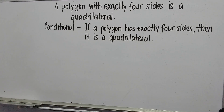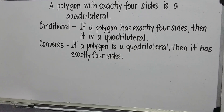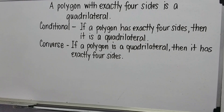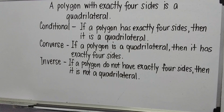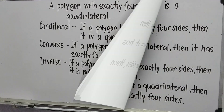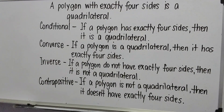Now, let us change that to a converse statement. The converse statement: if a polygon is a quadrilateral, then it has exactly four sides. The hypothesis and conclusion are now interchanged. Take a look at the inverse statement: if a polygon does not have exactly four sides, then it is not a quadrilateral. Both the hypothesis and conclusion of the conditional statement are negated. And the contrapositive statement: if a polygon is not a quadrilateral, then it doesn't have exactly four sides.